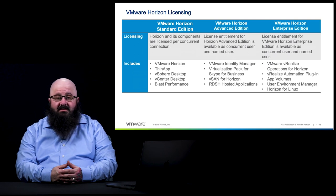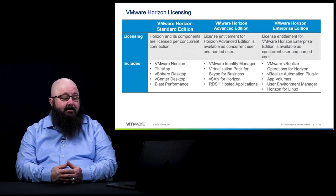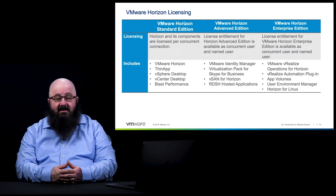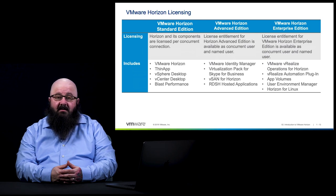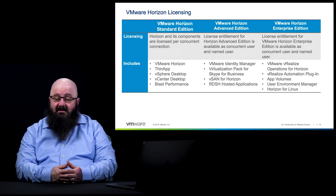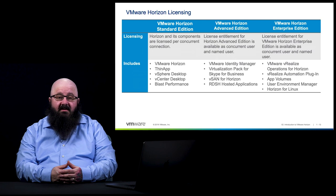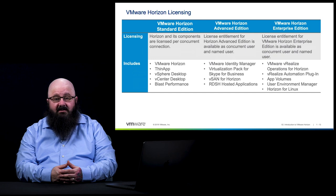vRealize Operations allows us to monitor the environment to ensure desktops and applications are performing at their best. The vRealize Automation plugin allows us to automate the process of creating workflows for desktops, pools, and so on. App Volumes allows us to provision applications out to the environment, and User Environment Manager allows us to manage the profiles a user may have. Horizon for Linux allows us to leverage Linux clients as well as Linux desktops across a variety of supported Linux distributions.